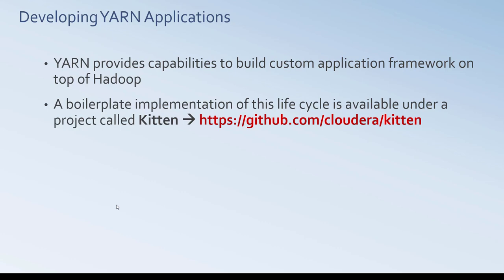If you're interested in developing YARN applications, you can even develop a simple Java program and convert it into a YARN application. YARN internally provides capabilities to build custom application frameworks on top of Hadoop. A boilerplate implementation of this lifecycle is also available under the GitHub project called Kitten — the URL is provided. As a developer, you don't have to worry about implementing the core capabilities of YARN; you can use the Kitten project and focus on your application logic. In the next video, we will touch upon new components and features in Hadoop 2 and the core differences between Hadoop 1 and Hadoop 2.